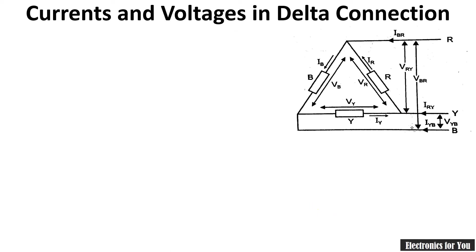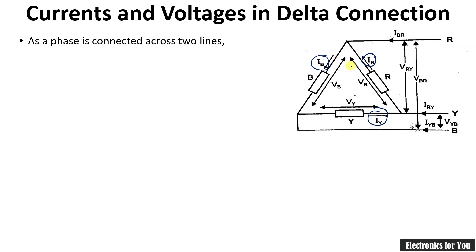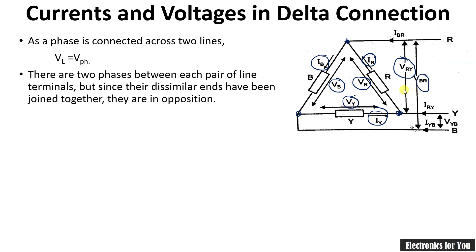Now let us find the current and voltage relationship in the case of delta connection. Here the phase currents are IB, IR, and IY respectively. The voltages across the phases are VR, VB, and VY. Note that the voltage across any two points — for example, VR — equals the phase voltage VPR. Therefore we can conclude that VL equals VPh, meaning line voltage is equal to phase voltage in a delta connection.